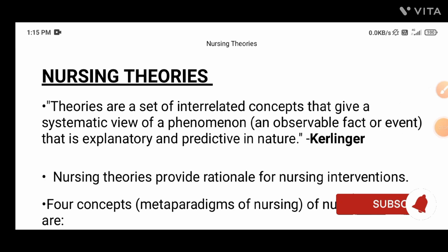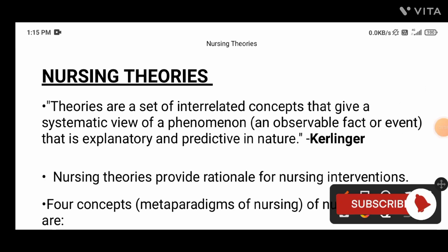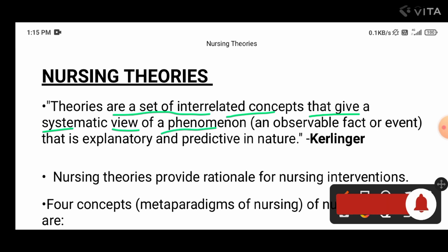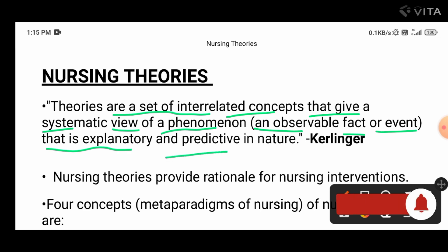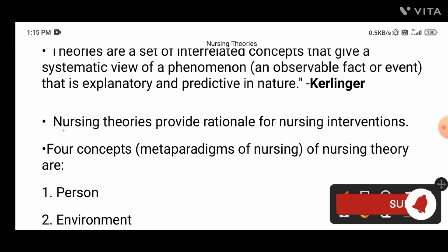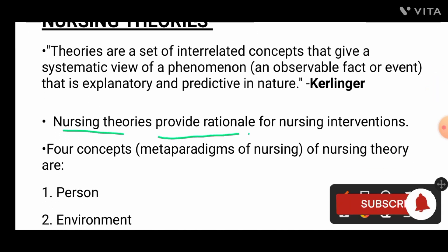First, the definition given by Curlingan: theories are a set of interrelated concepts that give a systematic view of a phenomenon and observable fact or event that is explanatory and predictive in nature. Nursing theories provide a rationale for nursing interventions.